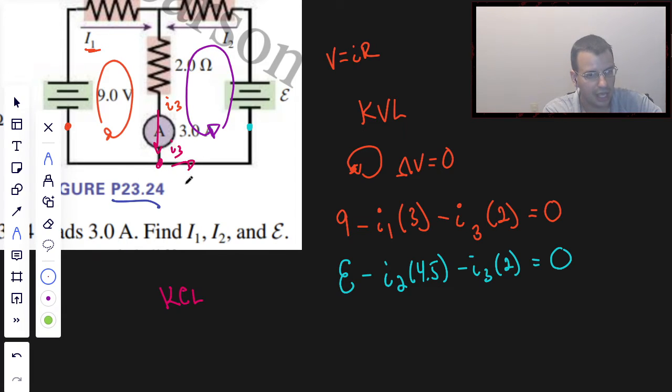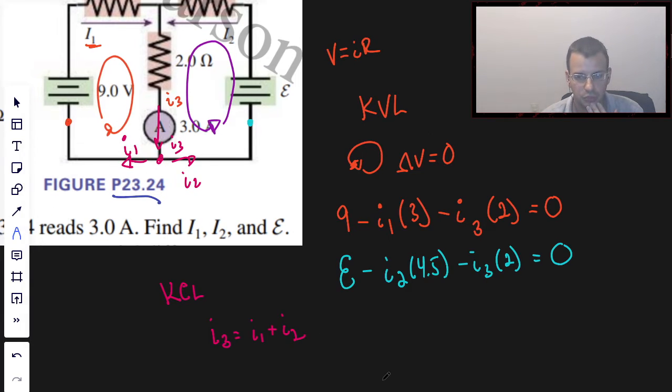Long story short, I3 goes down this way, I2 goes out that way, I1 goes out that way. We could also use this top node up here. It doesn't matter. We're going to say that I3 has to equal I1 plus I2. Fair enough. All right, so then to do this over here, we're going to say that I1 plus I2 minus I3 equals zero.